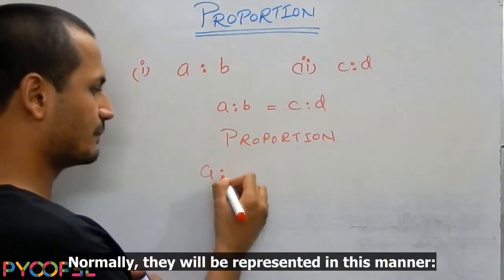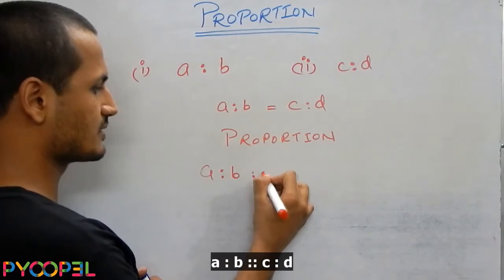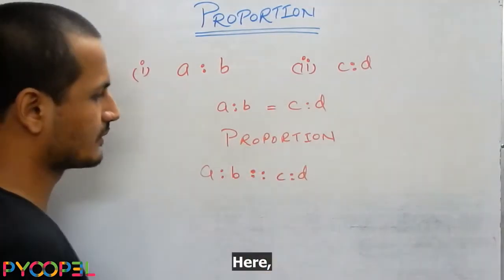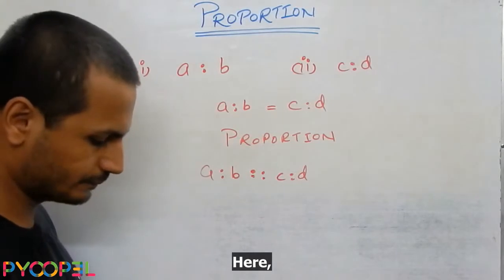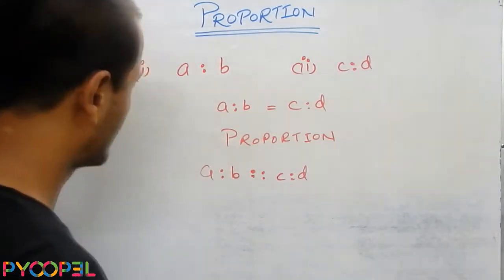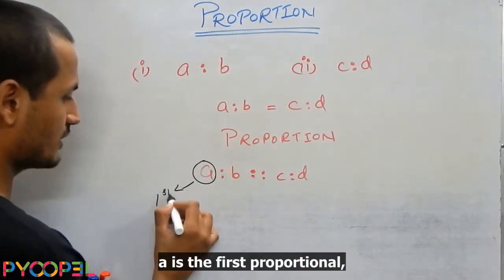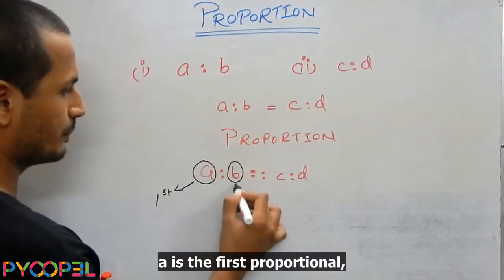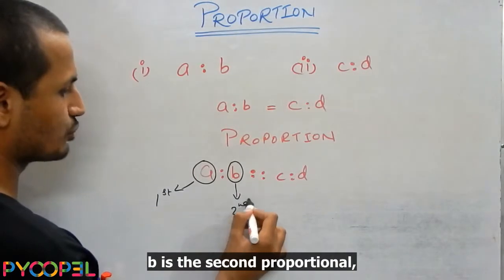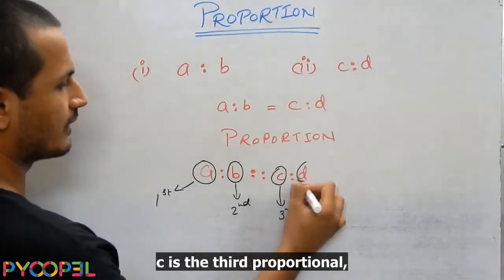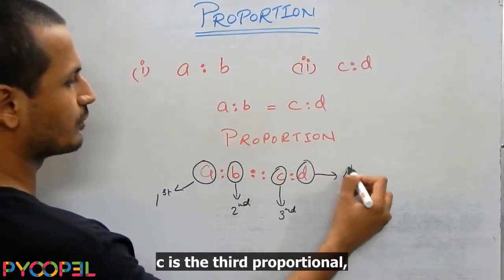Normally they will be represented in this manner. Here A is the first proportional, B is the second proportional, C is the third proportional and D is the fourth proportional.